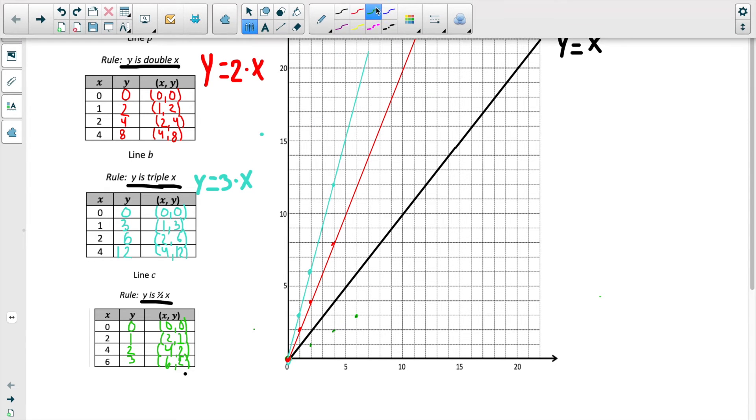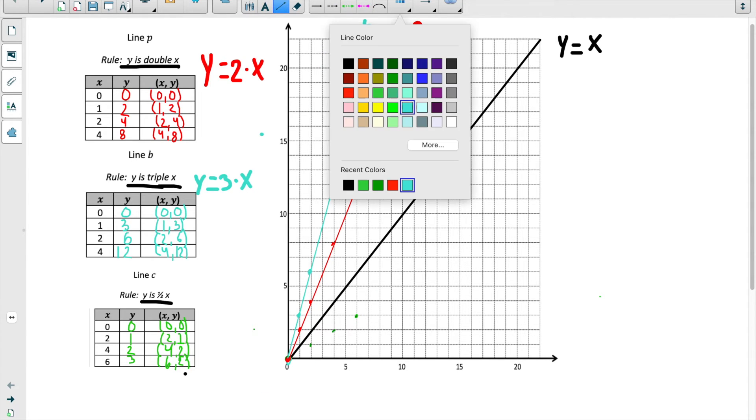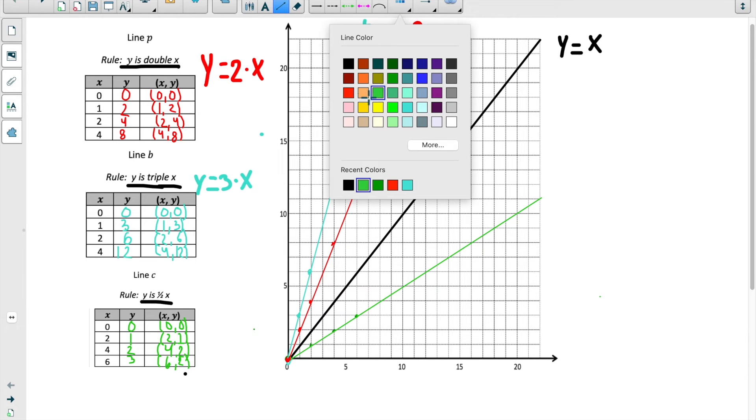Go ahead and make a prediction. You can pause the video. What would the steepness of line c be in relation to p and b? You can also start to look at the points I plotted. I'm going to draw line c. Let's see what happens. Let's see if your predictions are correct. Label this c.